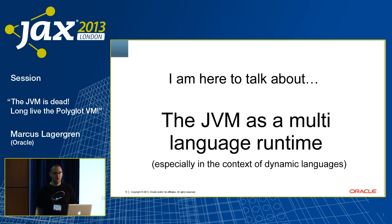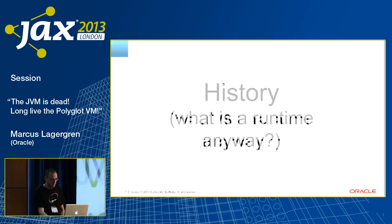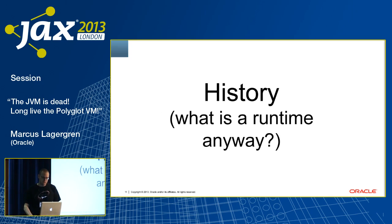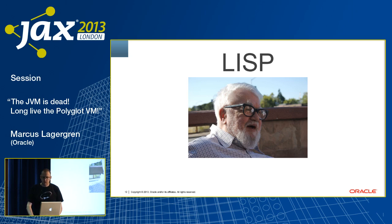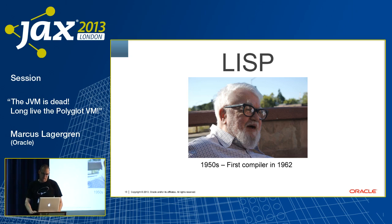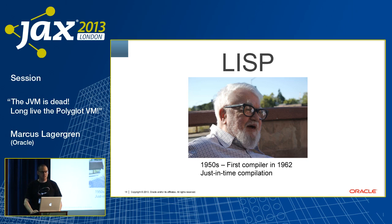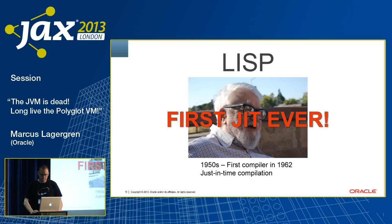Scala runs on the JVM, but it's not considered a dynamic language per se, even though it has some dynamic characteristics. So what is the runtime, anyway? We stand on the shoulders of some giants, and one of them is John McCarthy, the father of Lisp, who created Lisp at MIT in the 1950s. But the most important event happened in 1962 when his grad students did the first Lisp compiler, because that Lisp compiler was a JIT — a just-in-time compiler. I can't find that anyone had done a JIT compiler before 1962. So Lisp was the seed of JIT compilation, which is how any modern Java virtual machine or adaptive runtime works.